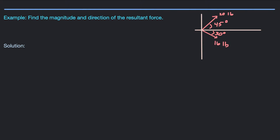Today we're looking at finding the resultant force and then finding the magnitude and direction of that resultant force. The resultant is really just the imaginary force that an object would feel if it were being pulled in two different directions by two different forces. For example, let's say the object is right here at the origin and someone is pulling at a 45-degree angle with a force of 20 pounds, and then something is pulling 30 degrees down from the x-axis with a force of 16 pounds. We'll call this the x direction and this the y direction.